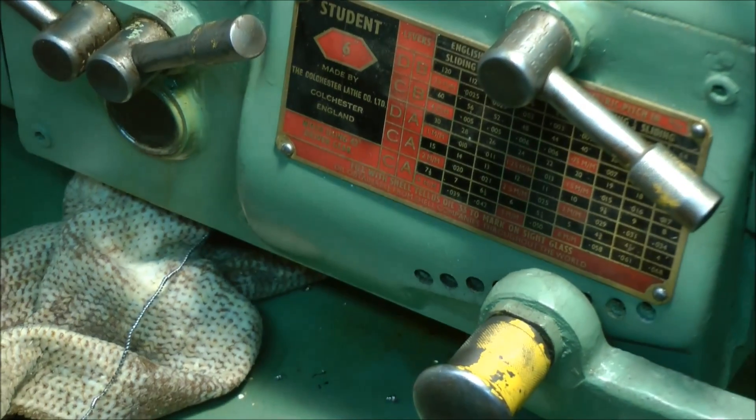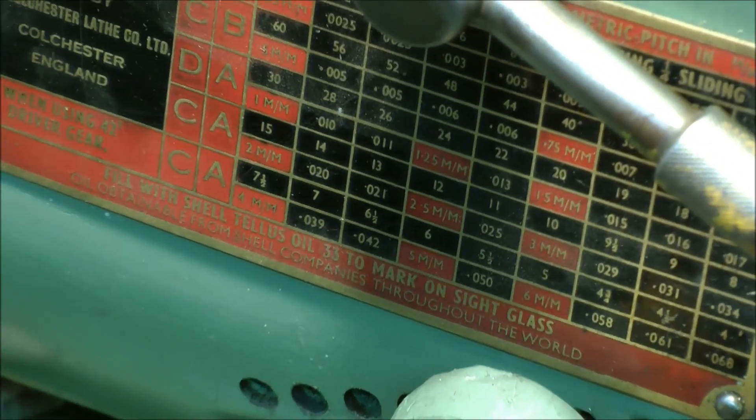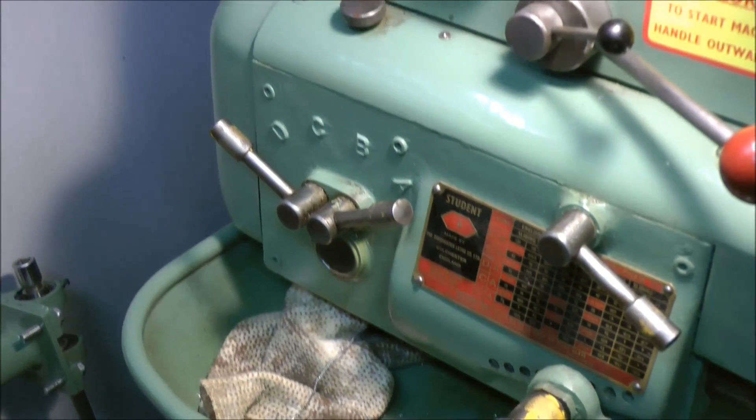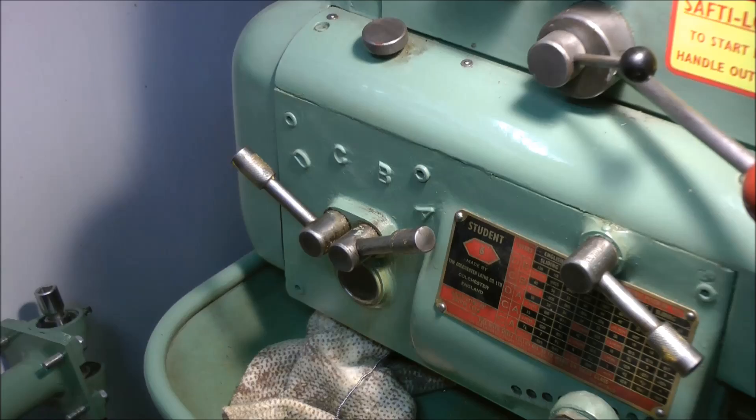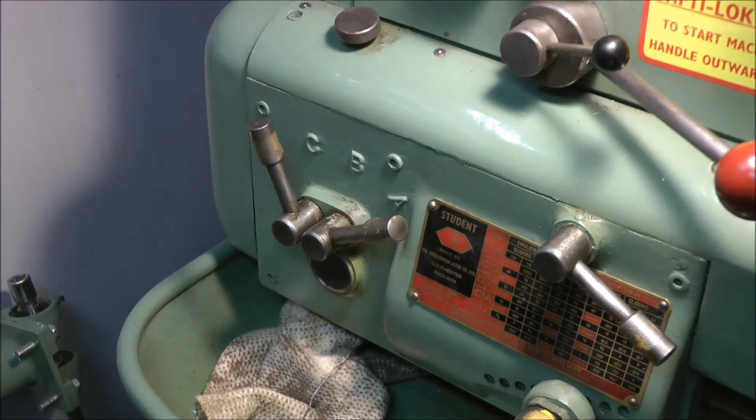Now for 2.5 let's have a look on the chart. 2.5 there, I need the gears setting up C and A. At the moment it's at D and A, so that's that done.